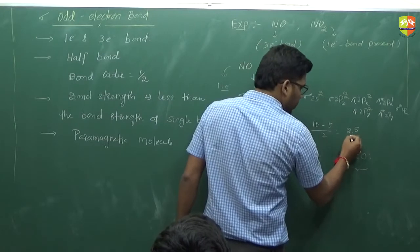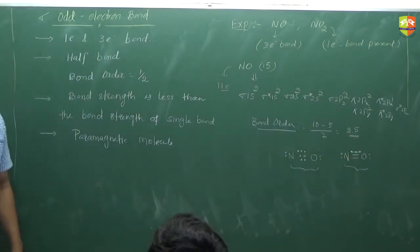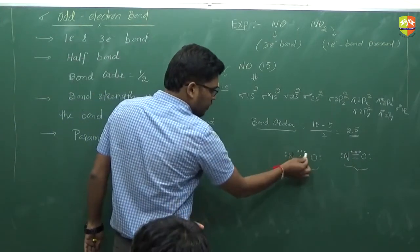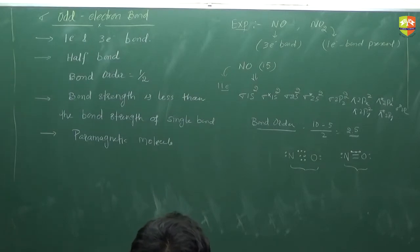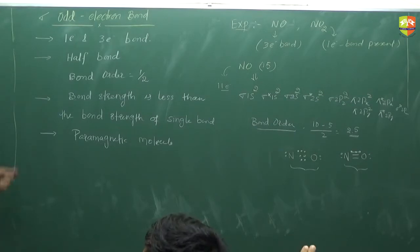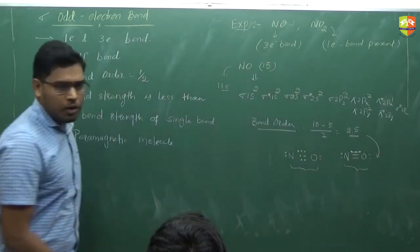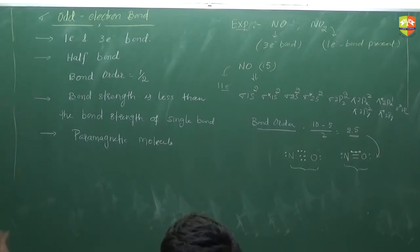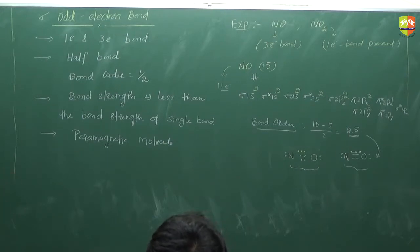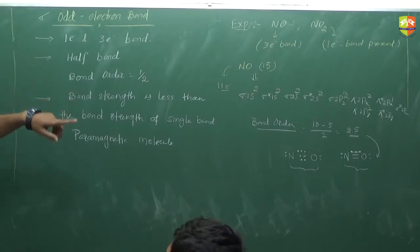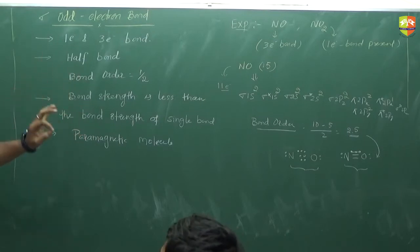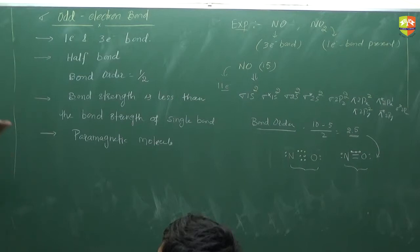Bond order says it has 2.5 — meaning 2 regular bonds and 1 half bond, which is an odd electron bond. That's why we are not moving only one lone pair to make a triple bond, because a triple bond would give bond order 3, which is not what we are getting. The bond order of NO is 2.5, and the 3-electron bond contributes 0.5.